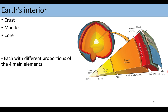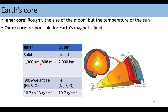Let's remember the three main layers of our earth. We have the crust, the mantle, and the core. The core is at the center. The crust is the outermost layer where we live, and each of the layers has a different proportion of those four main elements that we have on earth. So let's talk about the different layers from the inside out.